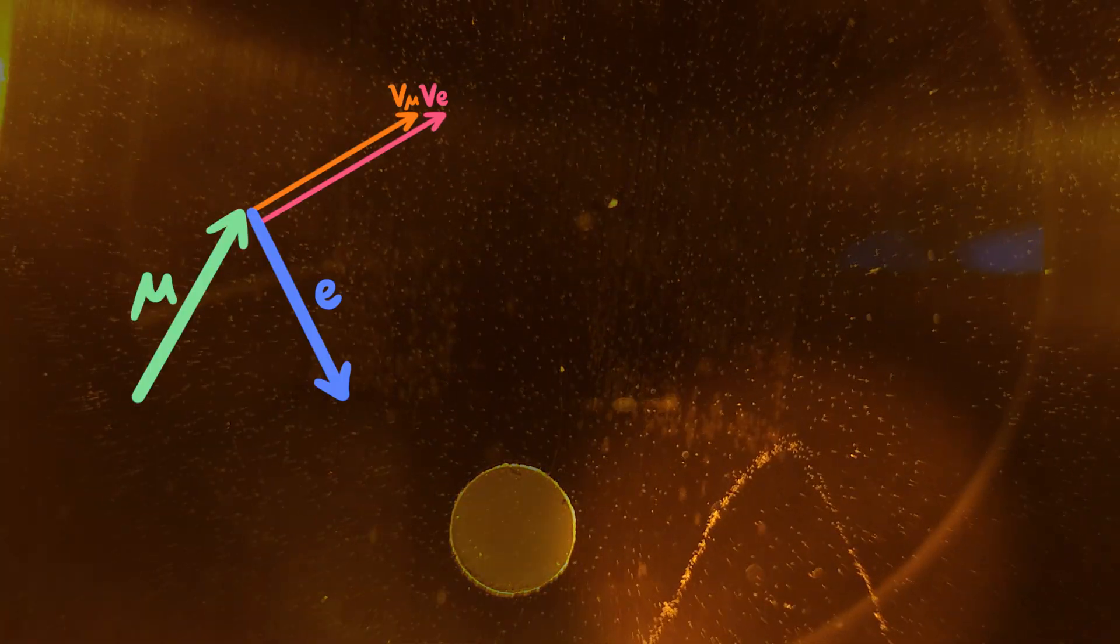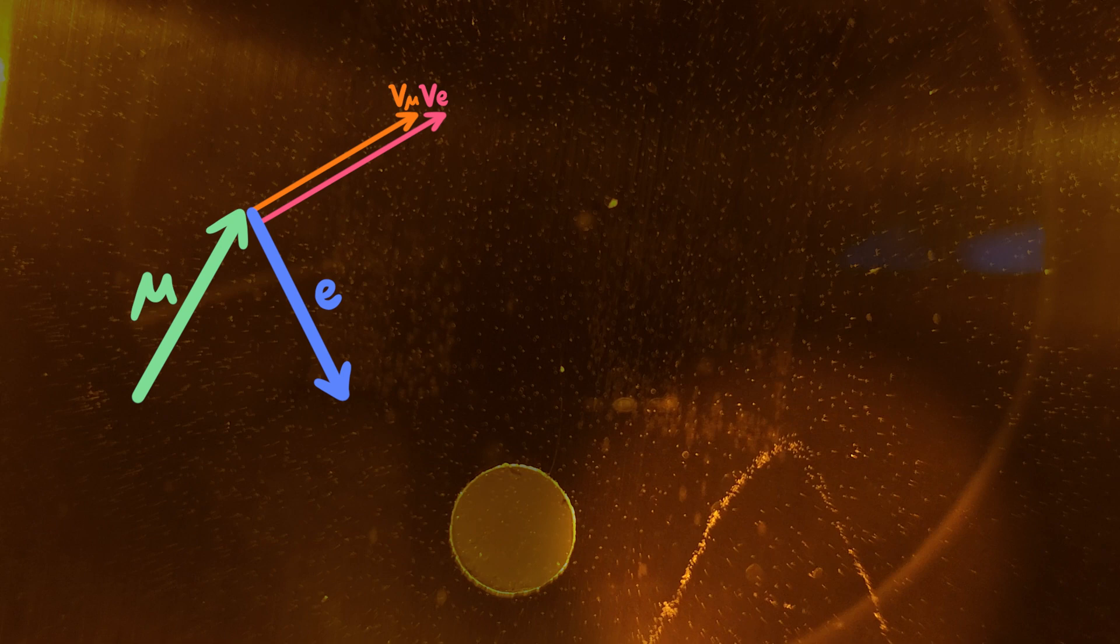Kinks such as this one here could represent a muon decaying into an electron and two neutrinos. Since particles must be charged to produce these tracks, the negatively charged electron and muon do, and the uncharged neutrinos do not.